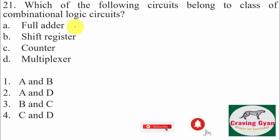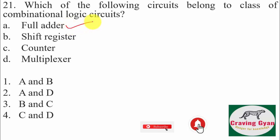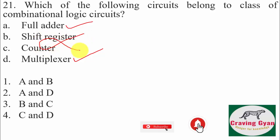Twenty-first question: identify the combinational logic circuits among the given options. In combinational circuits there is no memory and no feedback. Full adder is a combinational circuit and multiplexer is a combinational circuit; shift registers and counters are sequential circuits. Hence option number 2 is going to follow.